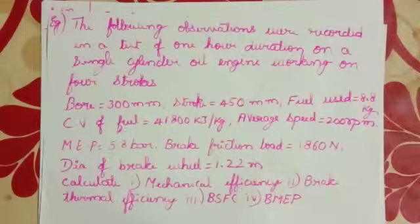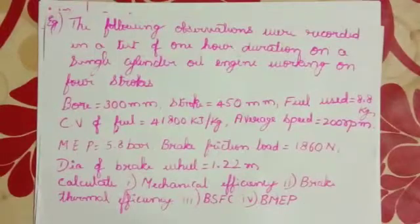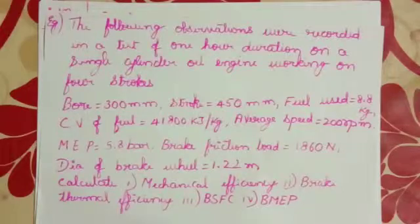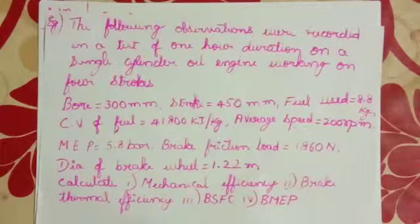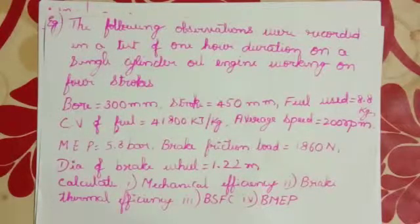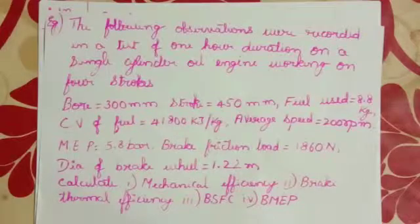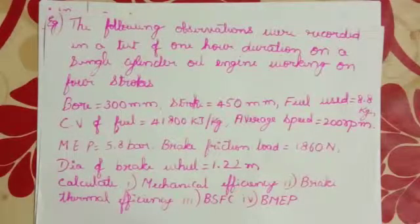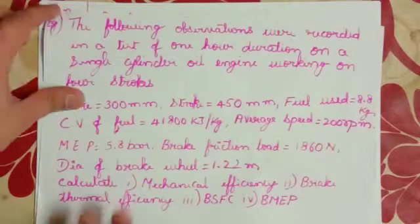Hello friends, welcome to my channel. Today we will take up a problem on IC engines. The following observations were recorded in a test of one hour duration on a single cylinder oil engine working on four strokes: bore 300 mm, stroke 450 mm, fuel used 8.8 kg, CV of fuel 41,800 kJ/kg, average speed 200 rpm, MEP 5.8 bar, brake friction load 1860 N, diameter of brake wheel 1.22 m. Calculate mechanical efficiency, brake thermal efficiency, BSFC, and BMEP.